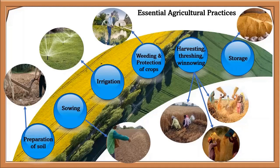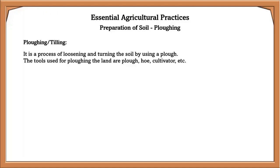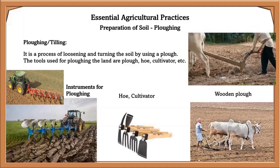The preparation of soil is very important because it plays a major role in seed germination. Before the crop is grown, three major steps are carried out: plowing, leveling, and manuring. Plowing or tilling is the process of loosening and turning the soil using a plough. Tools used for ploughing include the plough, hoe, and cultivator.